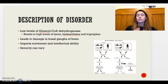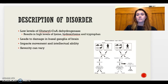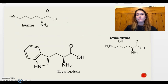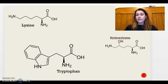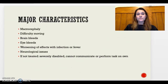The severity of this disorder can vary and depends on treatment, which we'll also go over. Most importantly, early treatment is critical — without it, the severity can be very high and can lead to permanent disability. These are pictures of the amino acids: lysine, hydroxylysine, and tryptophan — the amino acids impacted by Glutaric Acidemia Type 1.